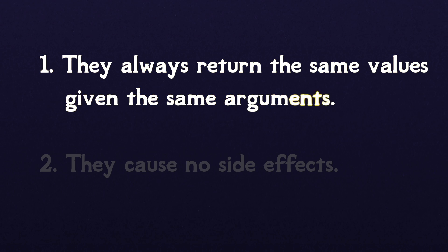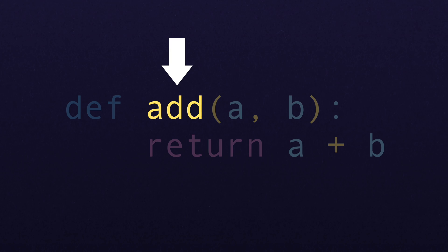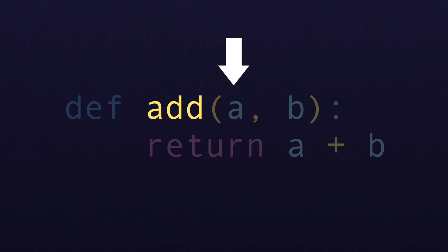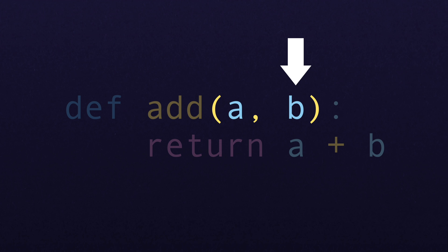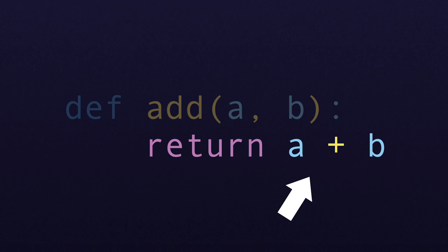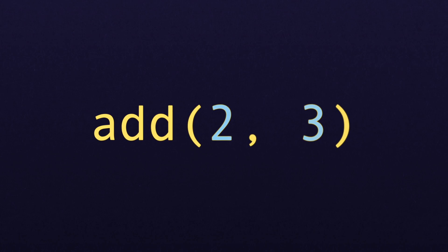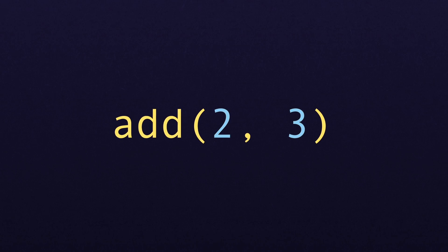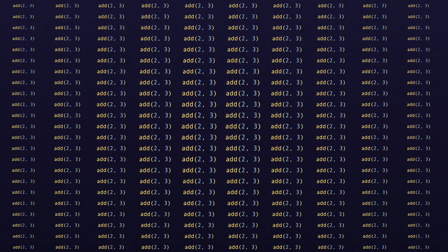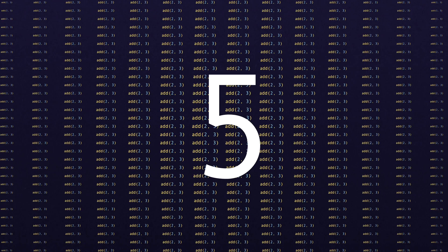Let's look at the first point. Here's an example. We have an add function that takes a and b as input and returns the sum. No matter how many times you call add with the same arguments, you'll get the same result. I'll call add with two and three one trillion times in a loop, and you'll go crazy waiting for anything but five as the result.